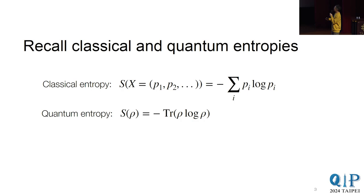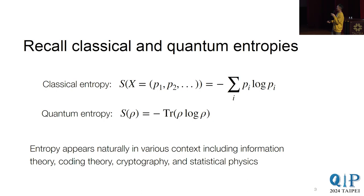So we'll just start by reviewing entanglement. So for classical entropy, as we know, it's defined as minus sum over P log P. And there's a simple quantum derivation, which is negative trace rho log rho. And you can see that when rho is diagonal, it reduced to the usual classical entropy. And entropy appears everywhere, so including information theory, coding theory, cryptography, and statistical physics.